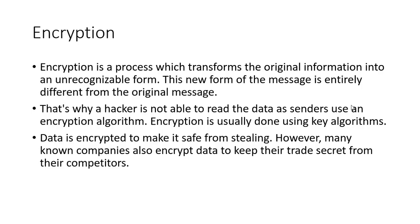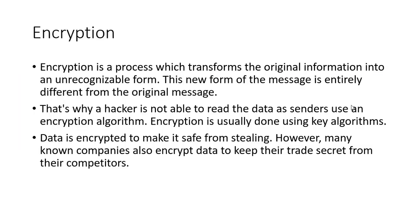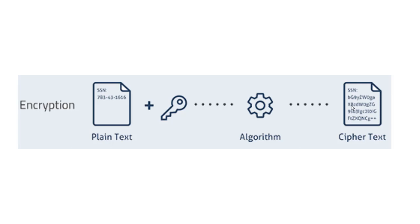This is the process which transforms the original information into an unrecognizable form. This is the output of an unrecognizable form. This is end-to-end encryption.